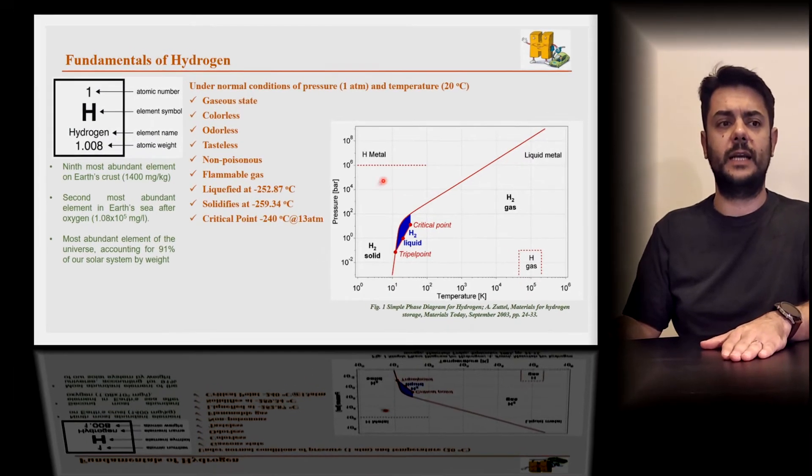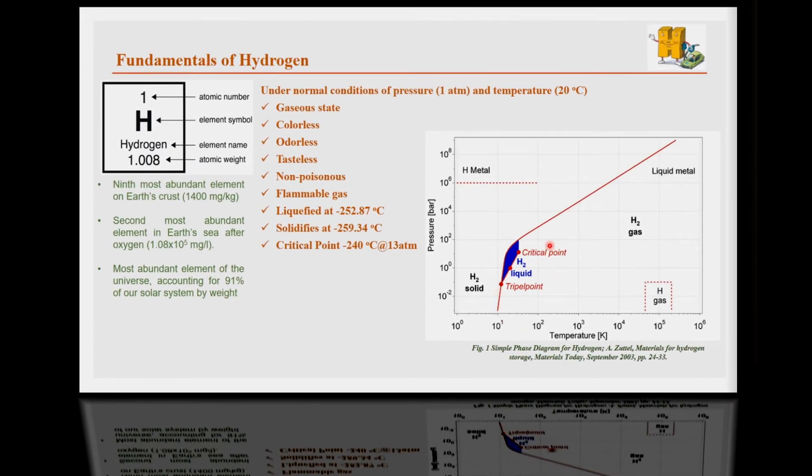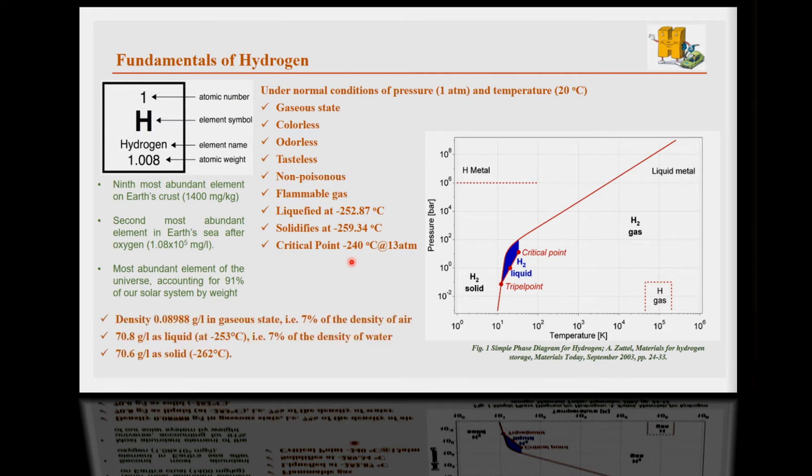Now, if we have a critical look on the phase diagram for hydrogen, we're going to see that the critical point for hydrogen is at minus 240 degrees centigrade at 13 atmospheres. And if we need to compare the density of gaseous hydrogen to air, we will see that gaseous hydrogen is almost 7% the density of air. At the same time, liquid hydrogen is almost 7% the density of water.